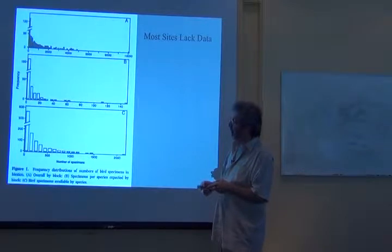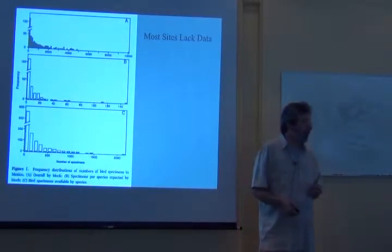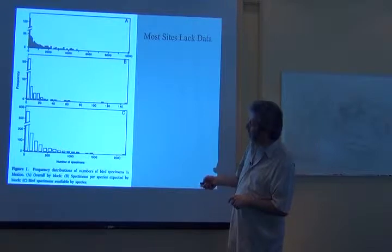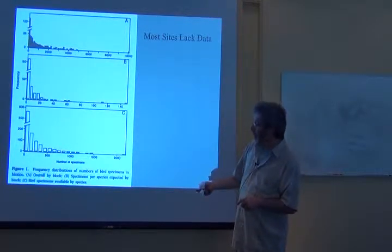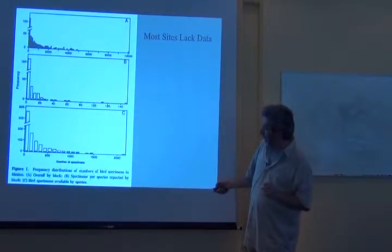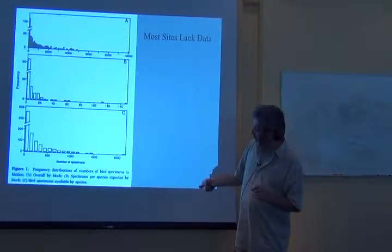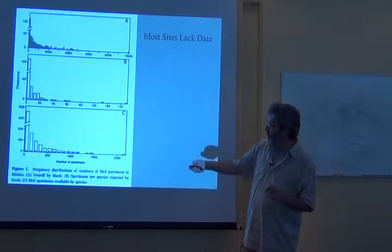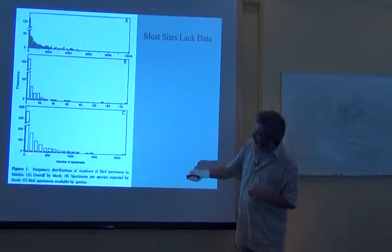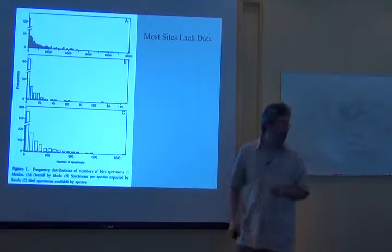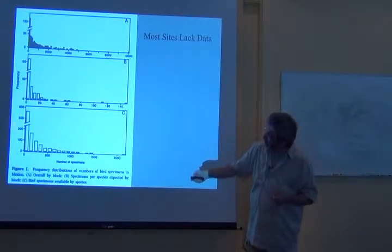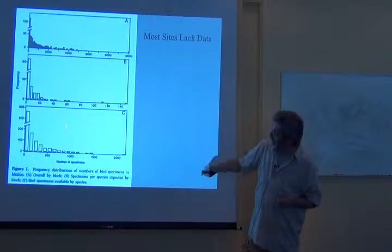Here's another illustration of how essentially most sites on Earth lack data — this is for birds in Mexico. All I want you to see is these are different measures of knowledge: overall number of records per pixel, specimens per species, and expected versus realized species. All I want you to see is that the lowest category in each case is the one that dominates — so these are the poorly known places and species. Whenever anybody tells you, why do you need to do biodiversity work, don't we already know? No.